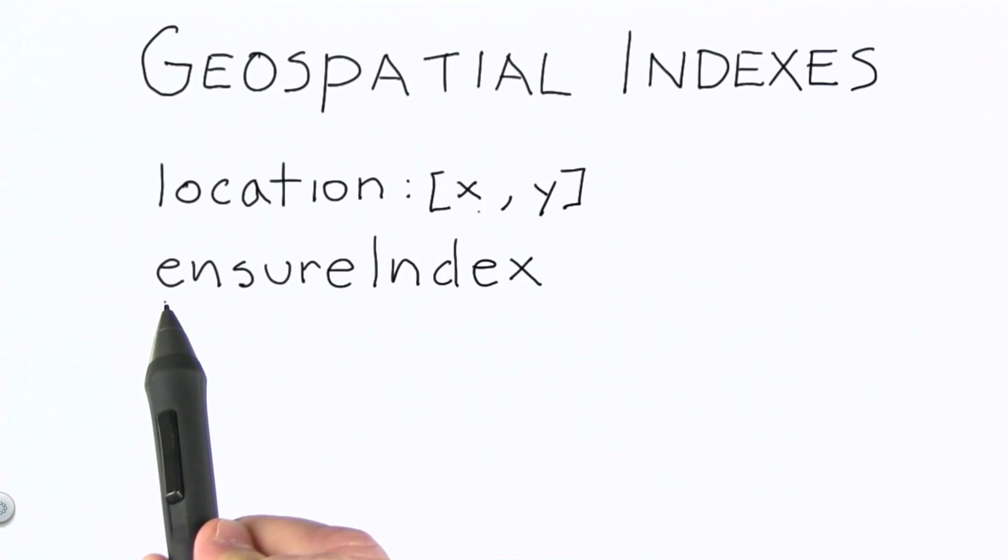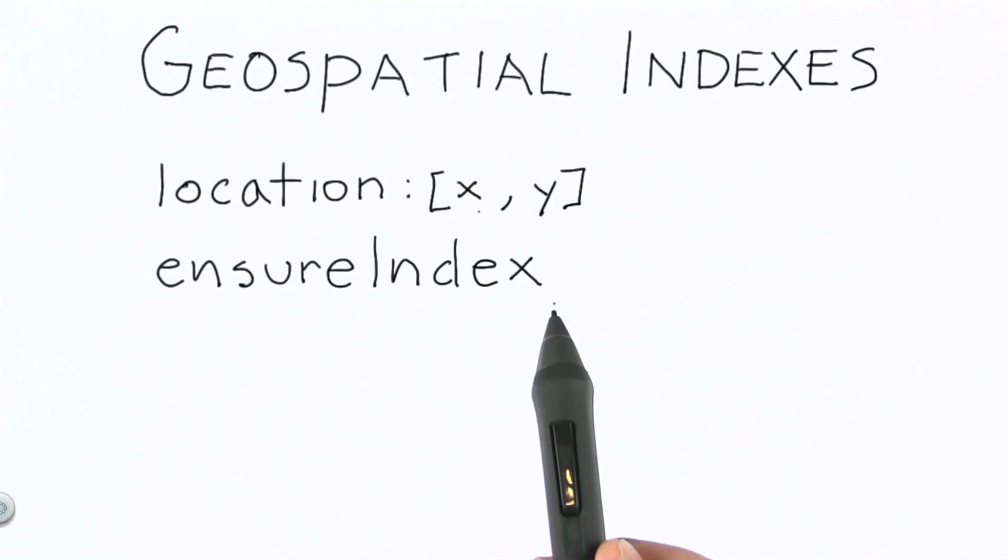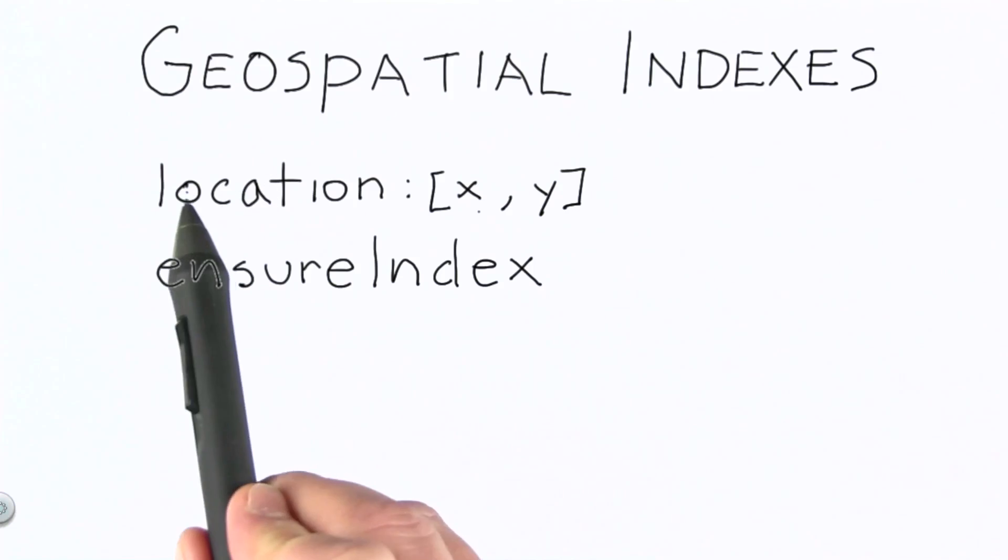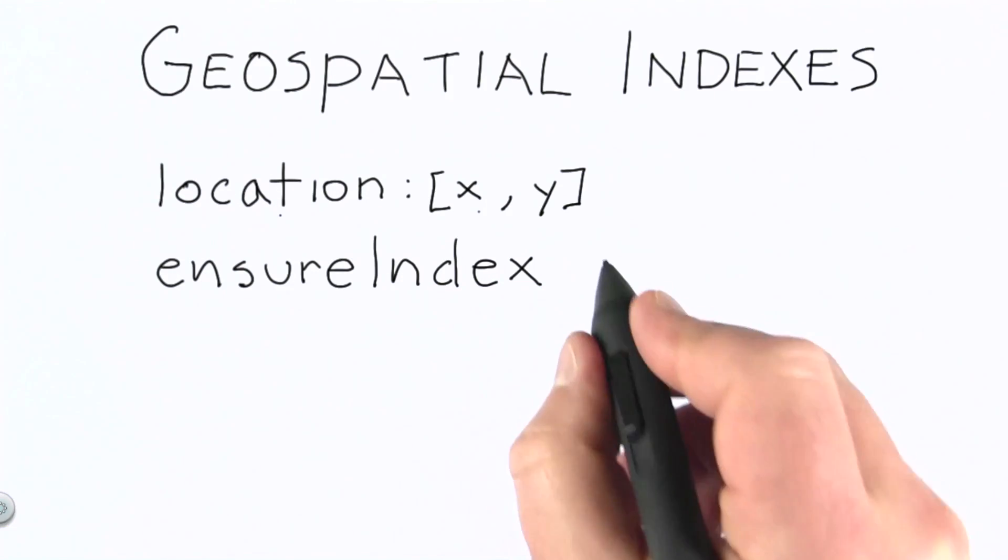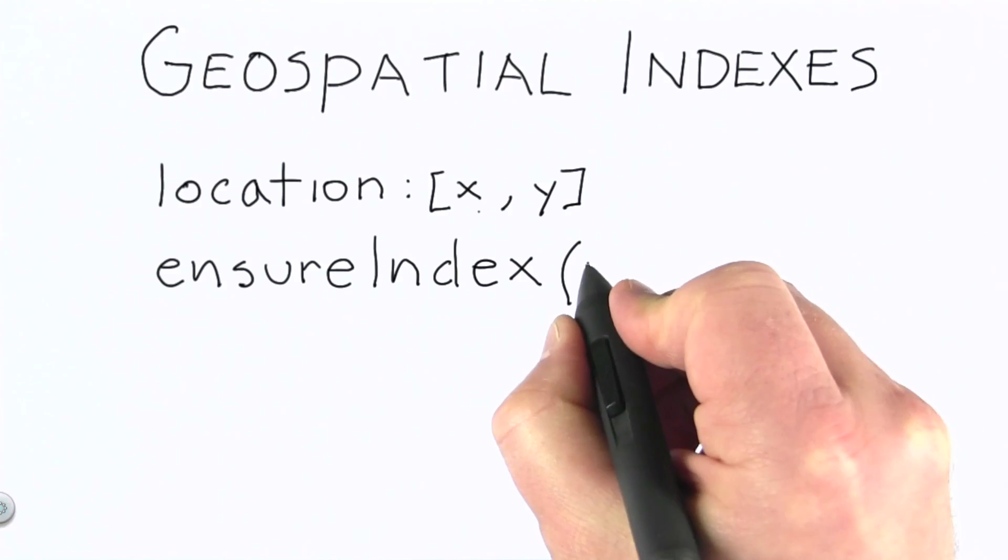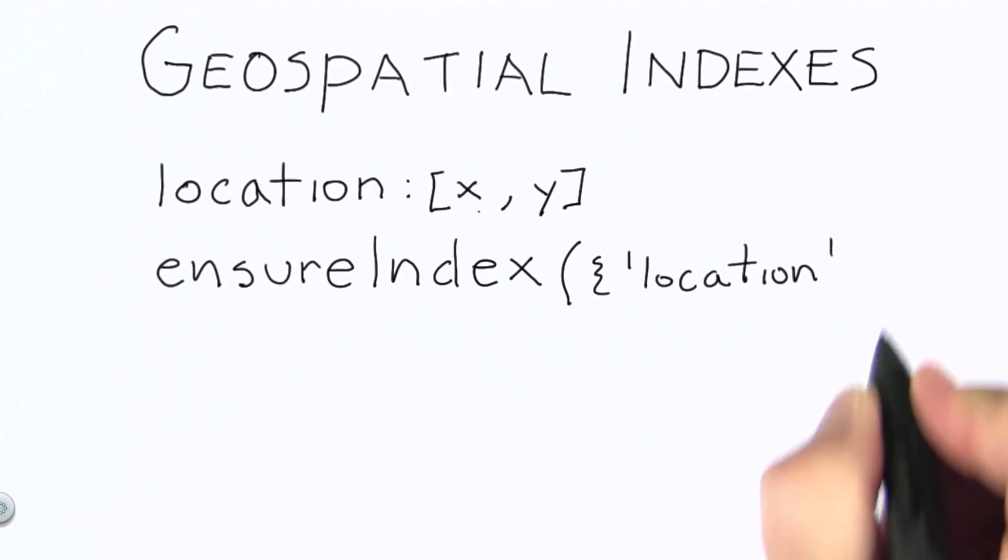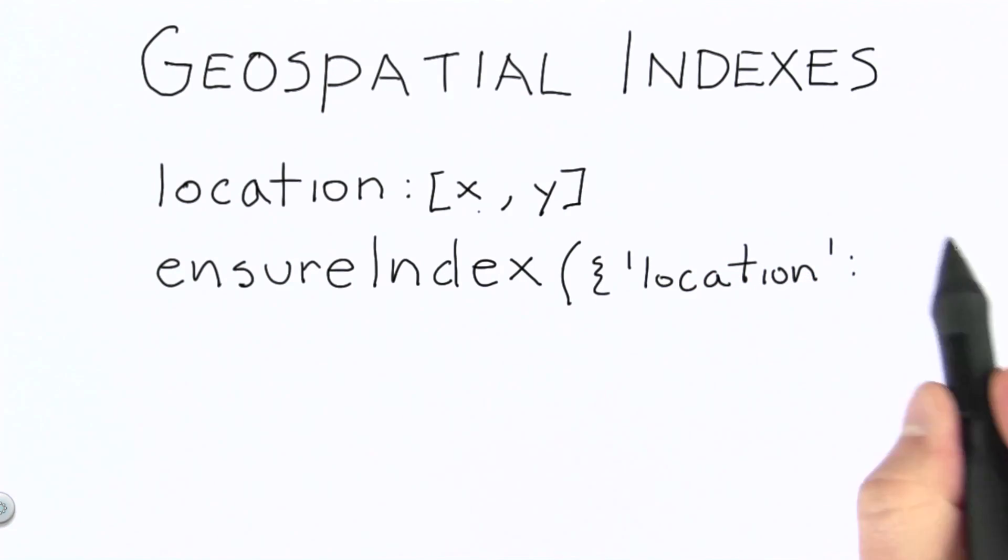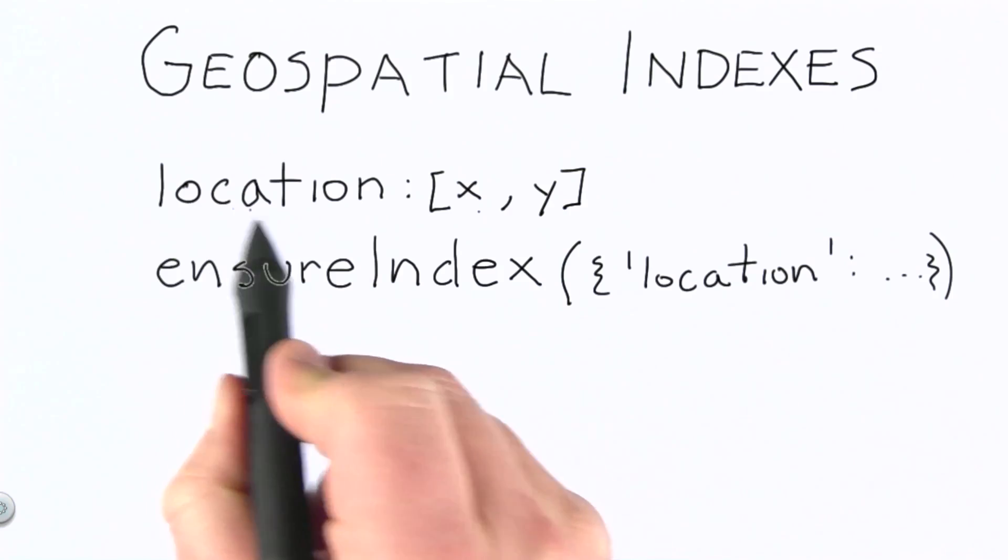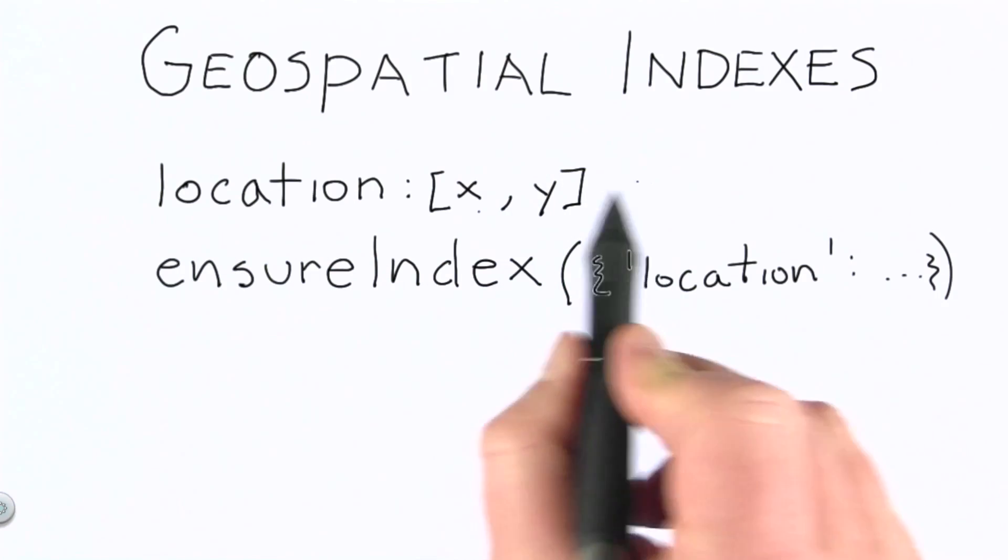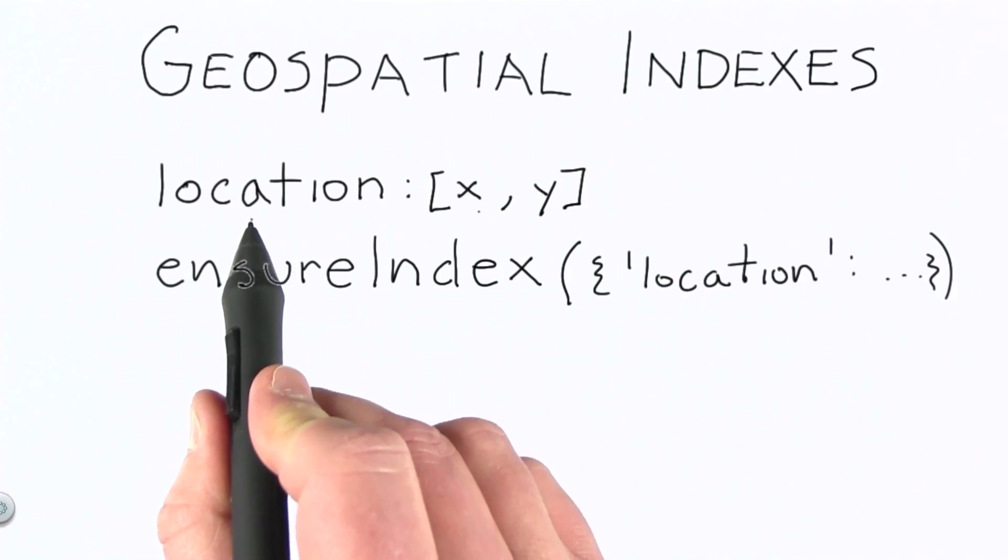The second thing you need to know about is that you need to ensure there's an index. You need to call ensure index and create an index on this particular field. In this case, I would need to call ensure index specifying location as the field and I would need to specify a direction here. We'll take a look at a specific example of that in just a bit. We need to create an index on this field that we have for our documents that we want to use in geospatial queries.